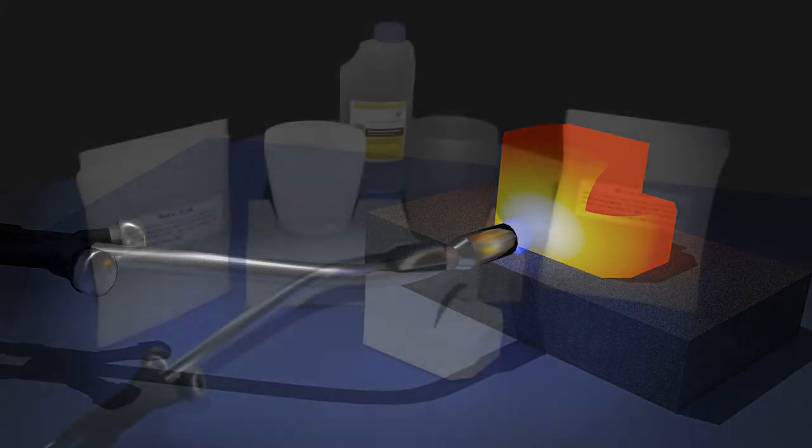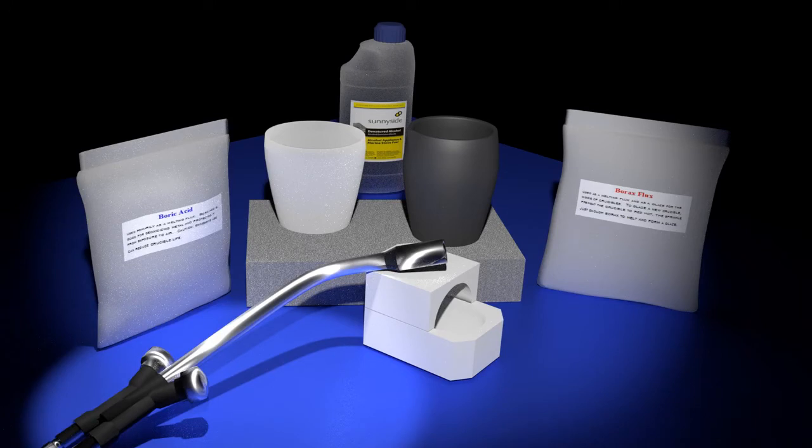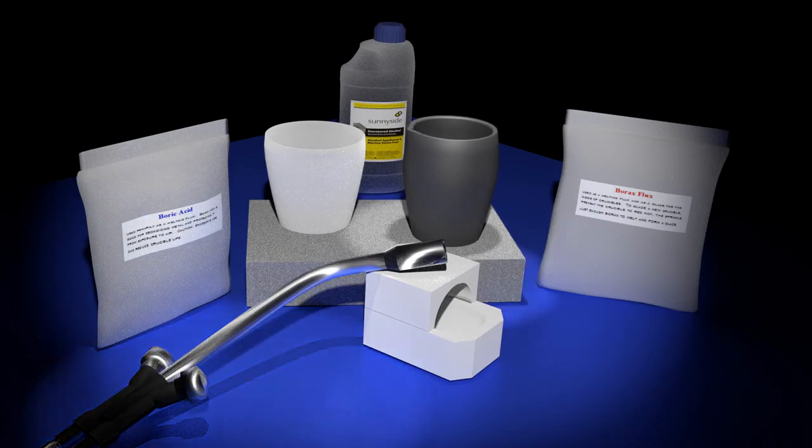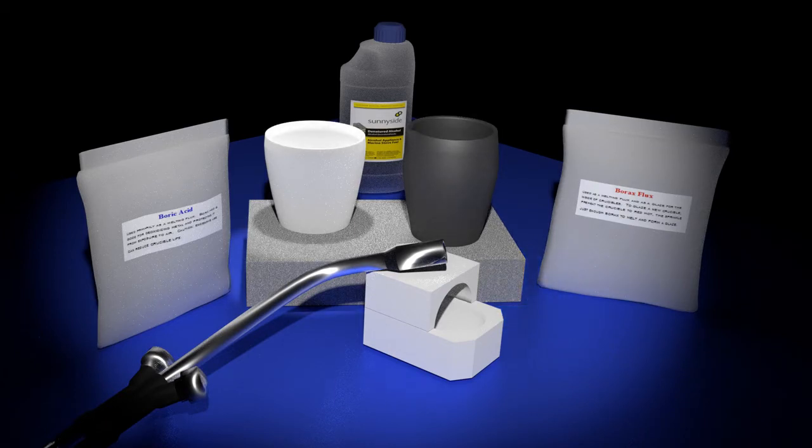Here is what you will need. Melting torch: use a torch made for this purpose. The common propane torch simply will not provide enough BTUs to do the job. Crucible: you can use a standard clay graphite crucible, a ceramic cup-shaped crucible, or you can use a burner ceramic crucible.